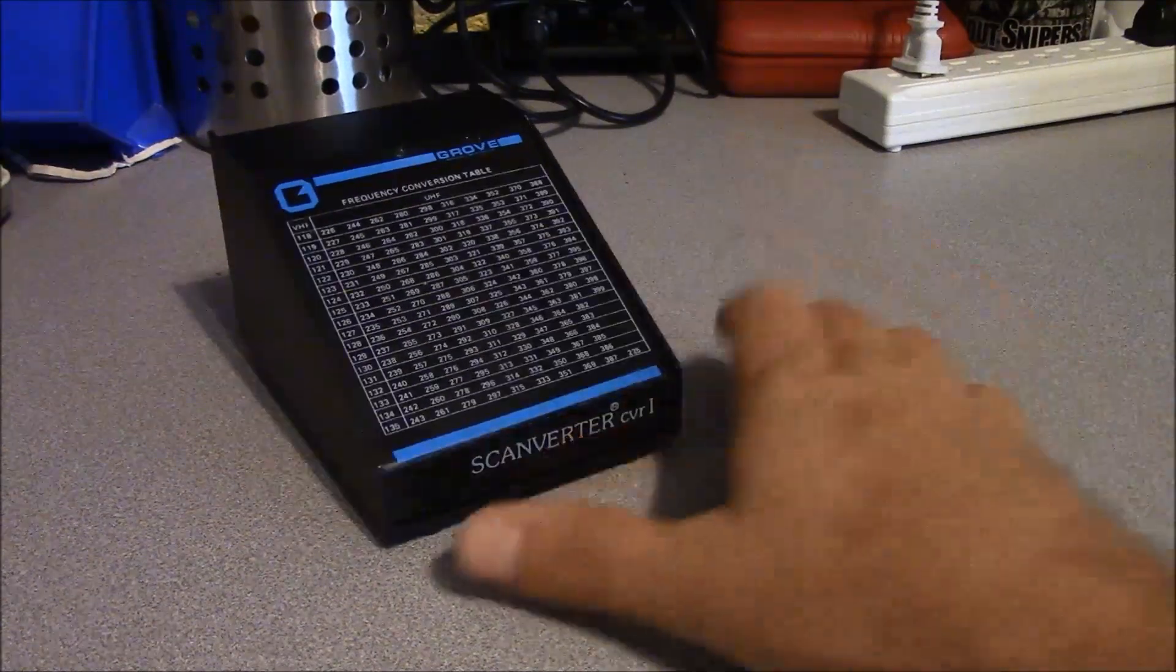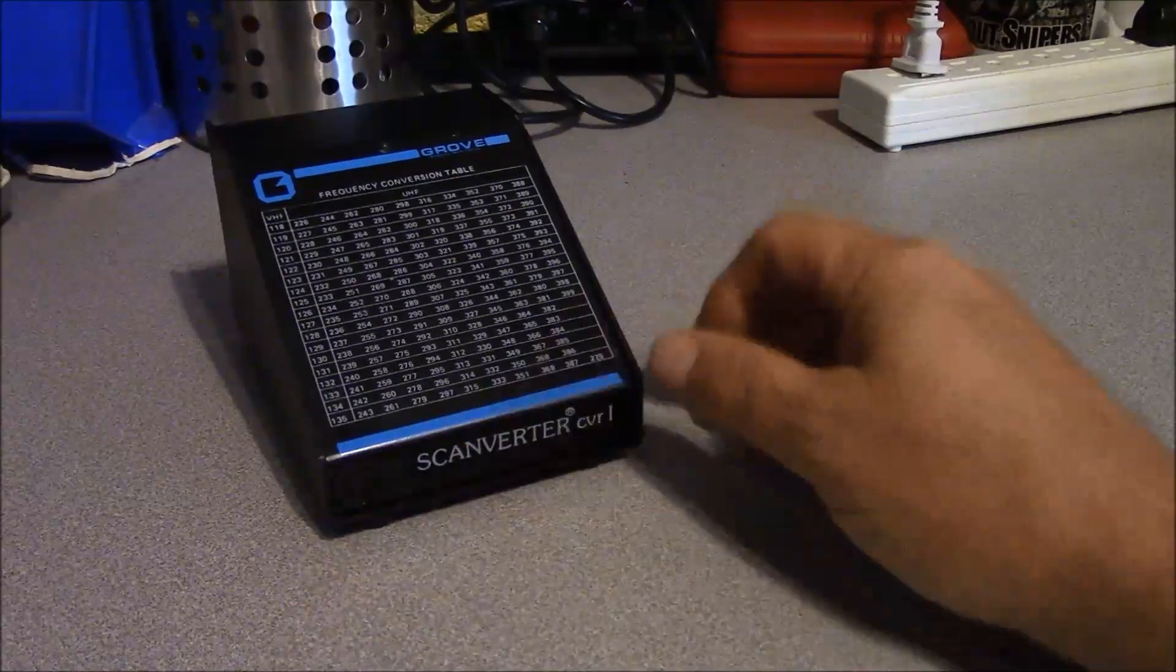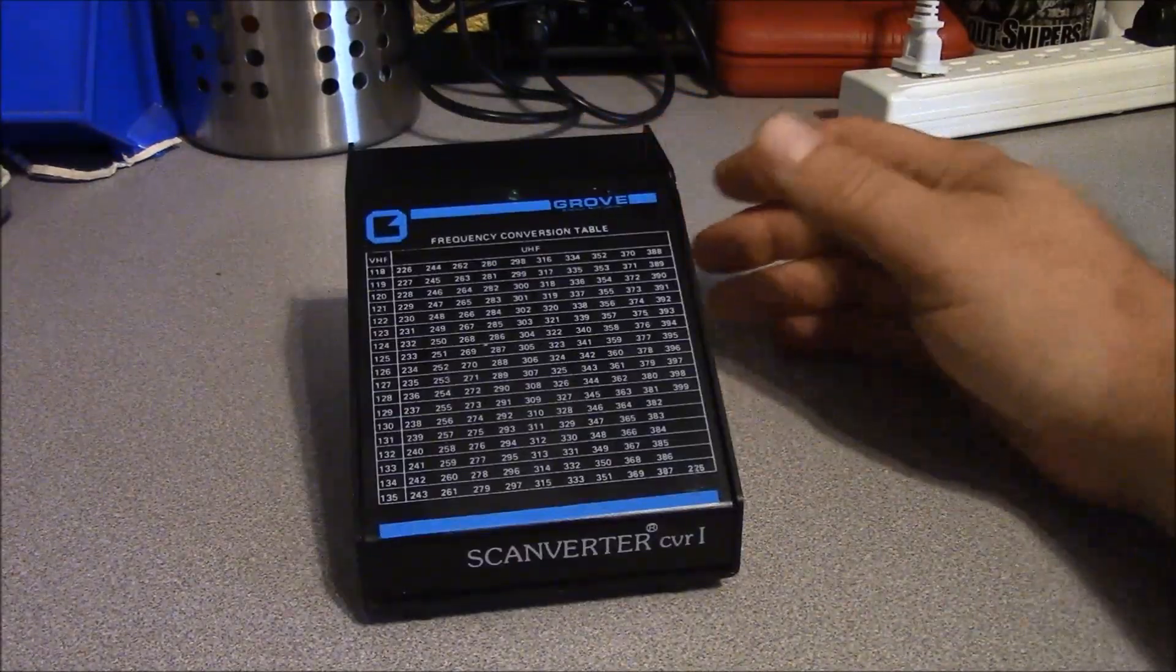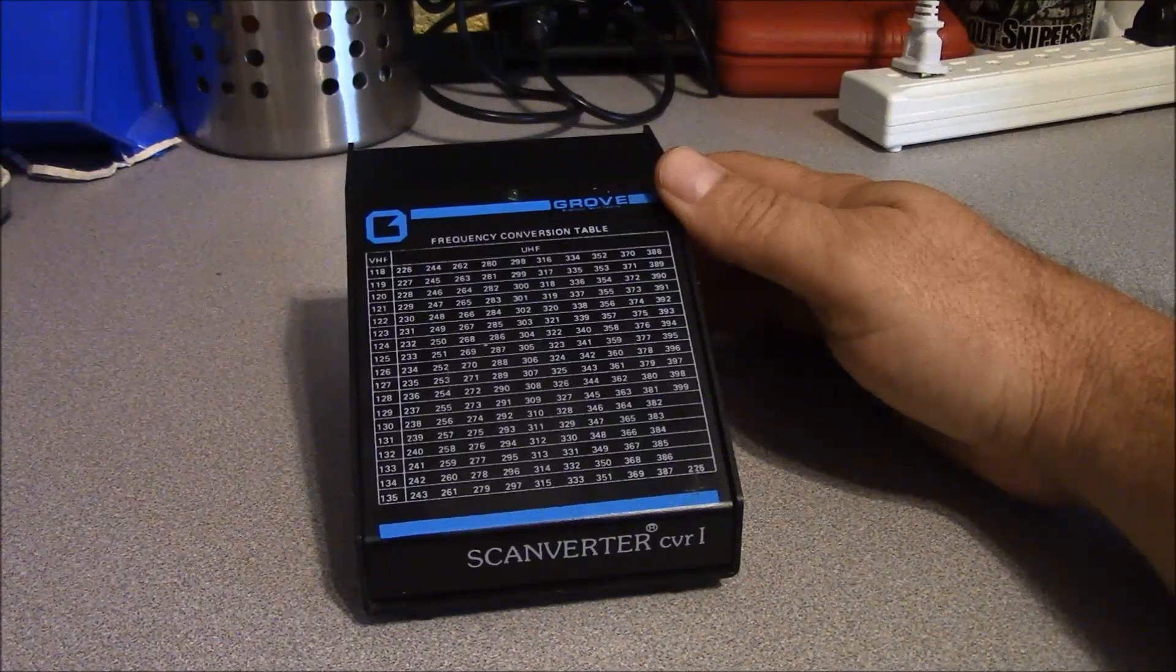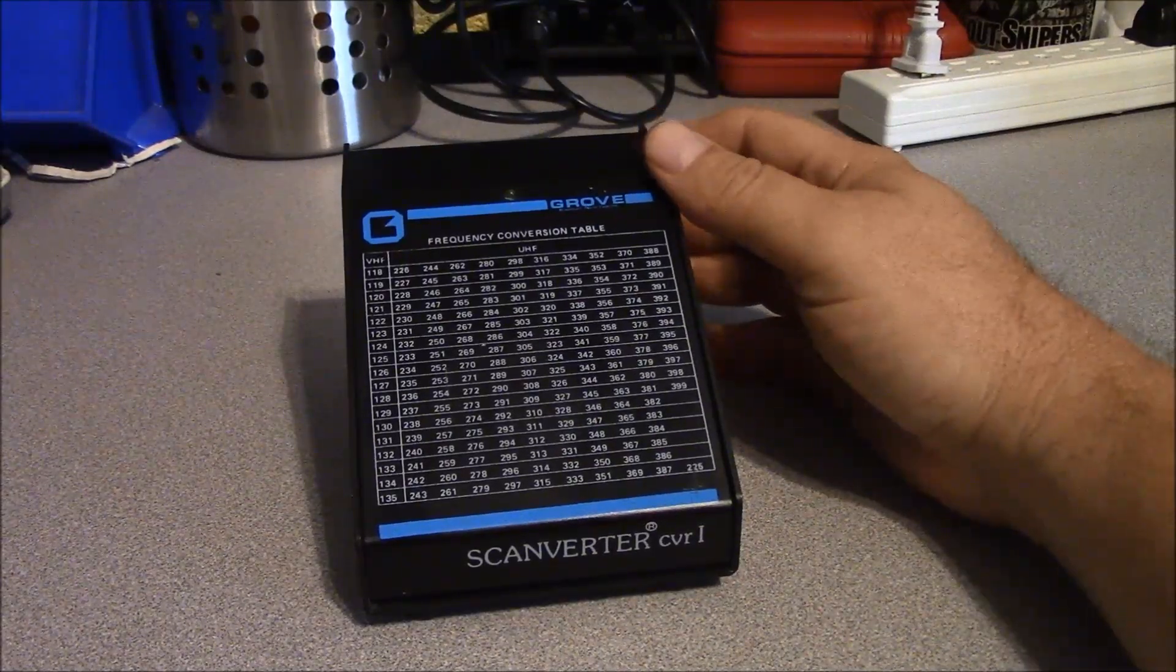Hello, this is Brett from Survival Comms, and on the bench today we have another piece of obsolete scanner technology for your enjoyment. This is a Grove Scanverter CVR1. This is a product of the early 1980s.